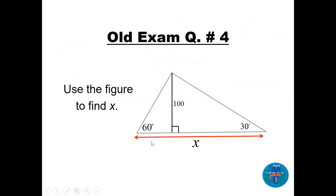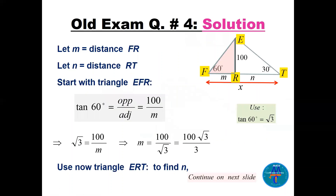Question number four: we need to find the value of x in a big triangle that has two right triangles inside. I'll label the vertices E, F, R, and T. The distance FR I'll call small m, and from R to T I'll call small n. So x equals m plus n.